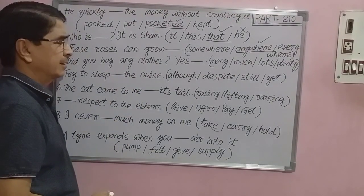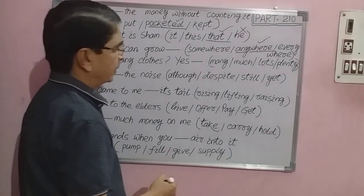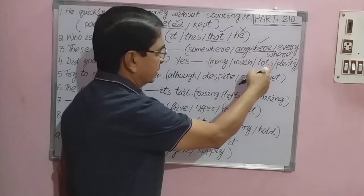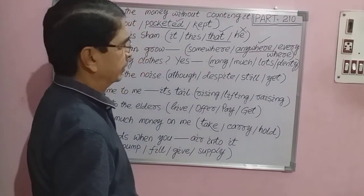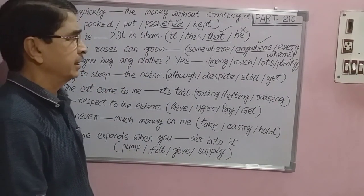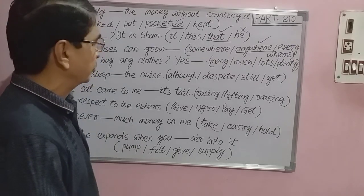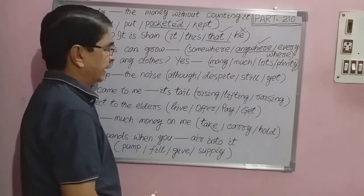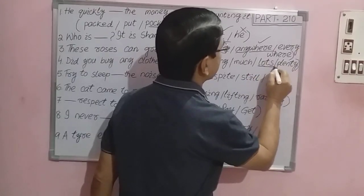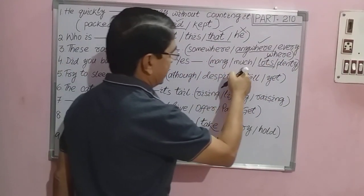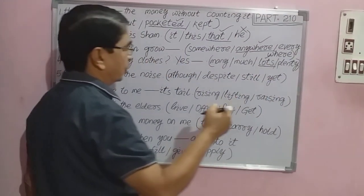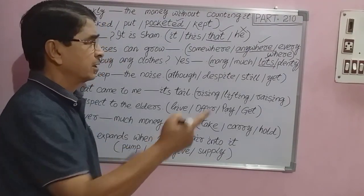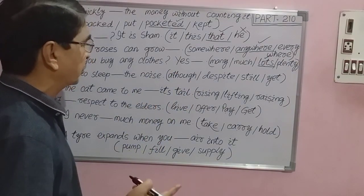Question number four: 'Did you buy any clothes? Yes, ___.' Options: A) many, B) much, C) lots, D) plenty. Many, much, and plenty are synonymous words, but 'lots' is the appropriate word to fill in the blank here.